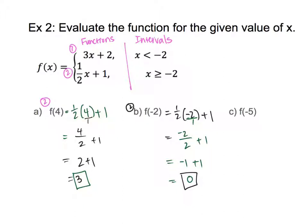For part C, x is negative 5. Negative 5 is smaller than negative 2, so I use the first equation. That looks like 3 times negative 5 plus 2. 3 times negative 5 is negative 15, plus 2 is negative 13. That's the output for that one.